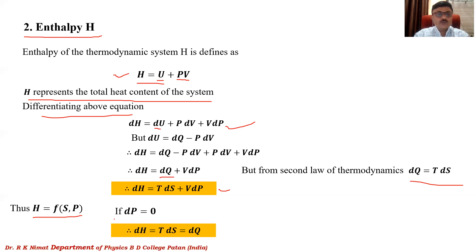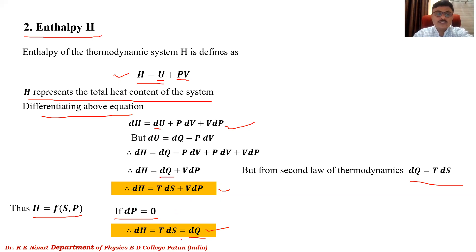If we take dP = 0, meaning the pressure of the thermodynamic system is constant, we get dH = T dS = dQ. This means that at constant pressure, the change in enthalpy of the thermodynamic system equals the amount of heat energy given to that system. This is how one can interpret the equation — the change in enthalpy equals heat supplied at constant pressure.